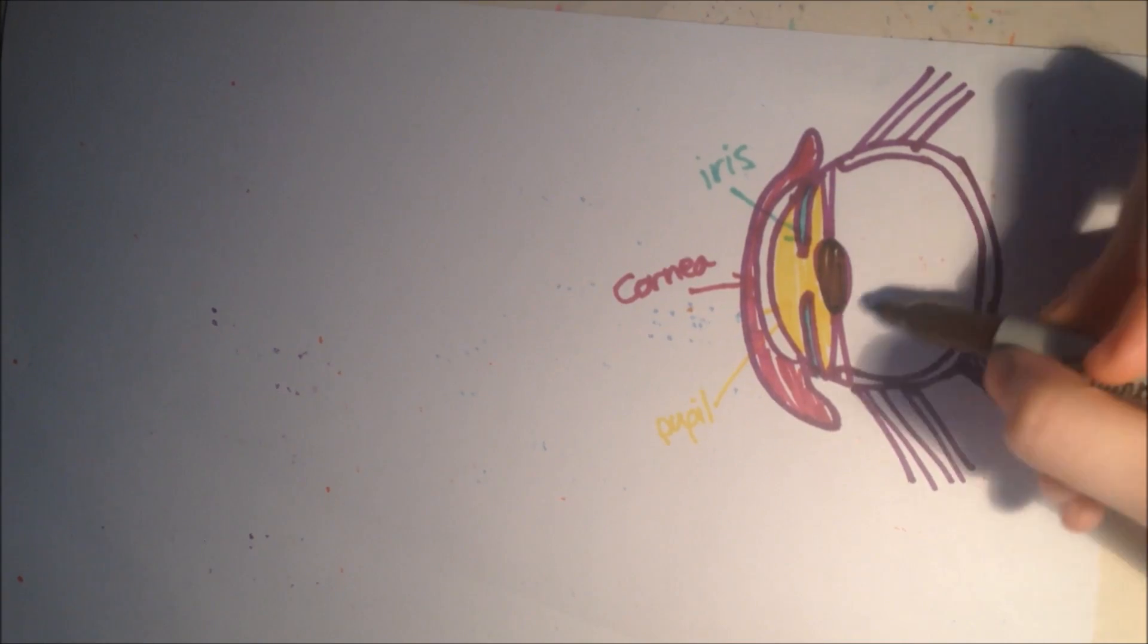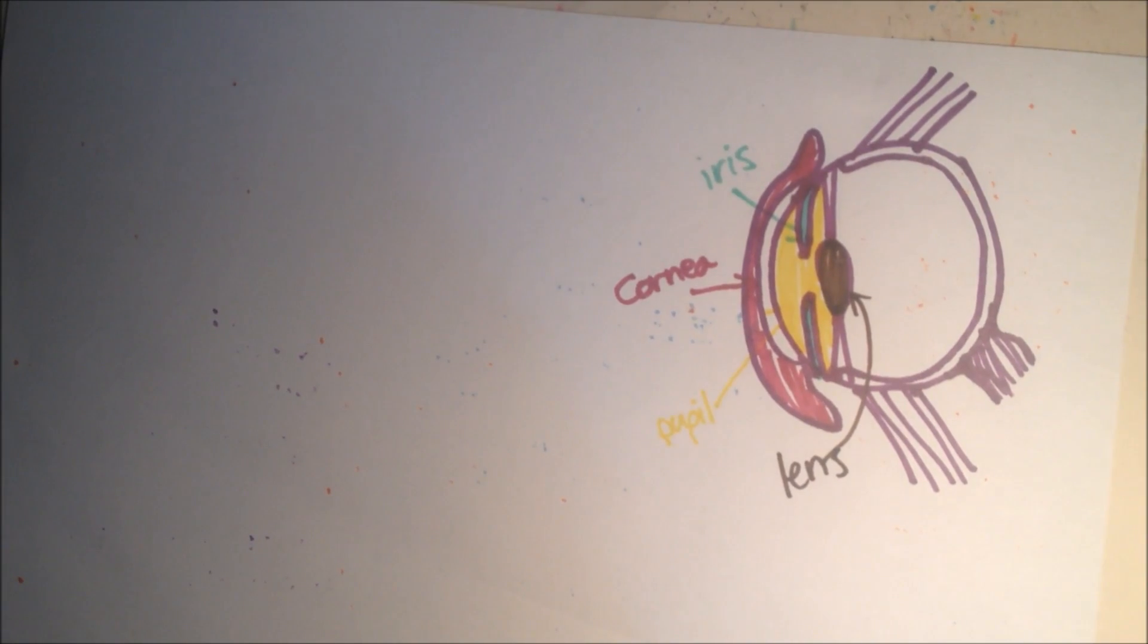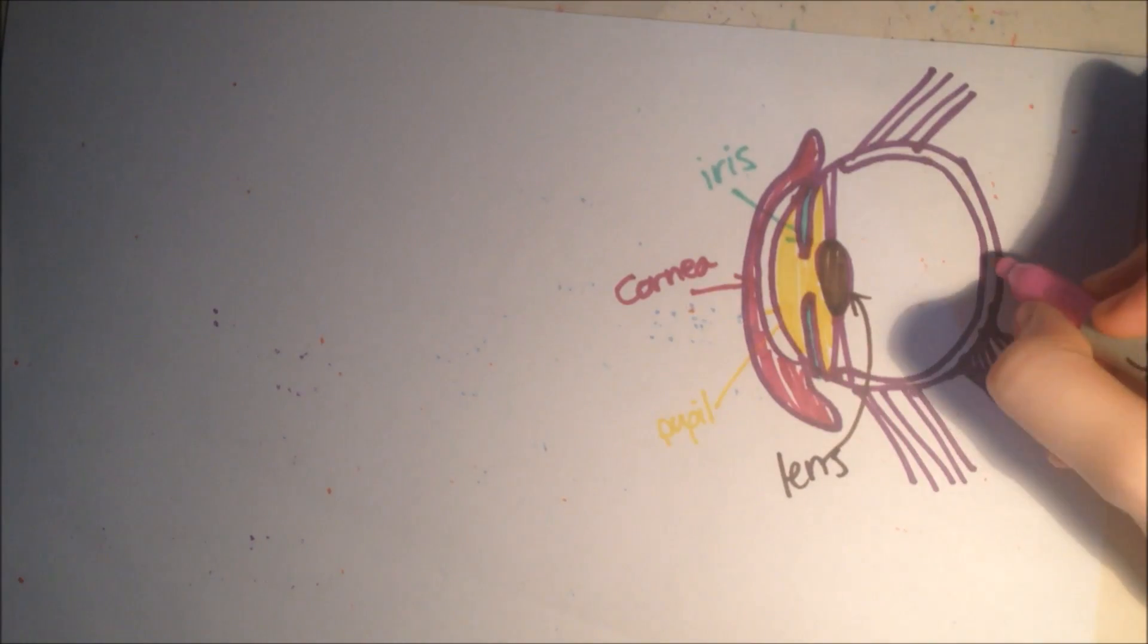The lens is this circular bit in the middle. Lens. And this also refracts light and focuses on the retina, which is here.